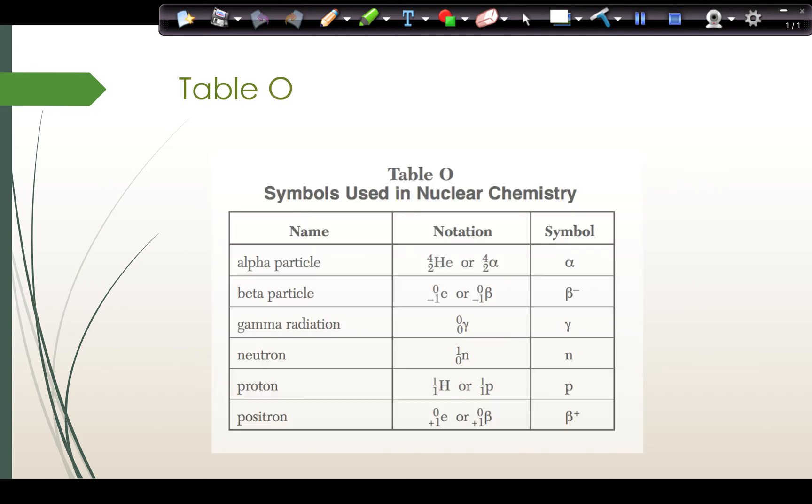We have table O that helps us in this chapter. We should notice that on table O, we have our notations that we're going to use in our nuclear reactions. These notations have our mass numbers on the top and our atomic numbers on the bottom, and some of them even include a charge.